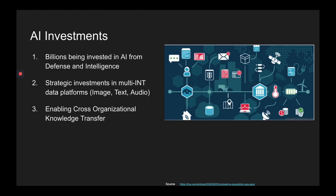To solve and overcome these problems, various organizations are investing billions of dollars in artificial intelligence. From the defense and intelligence communities, strategic investments are being made in multi-intelligence data platforms that include image, text, audio, speech, geolocation, and various other types of intelligence. These systems and their distributed natures create very advanced environments for engineers to adapt and build towards. As these investments are being made, we are opening our eyes to how we continue to preserve the privacy and security of the sensitive information that we're building these systems on.